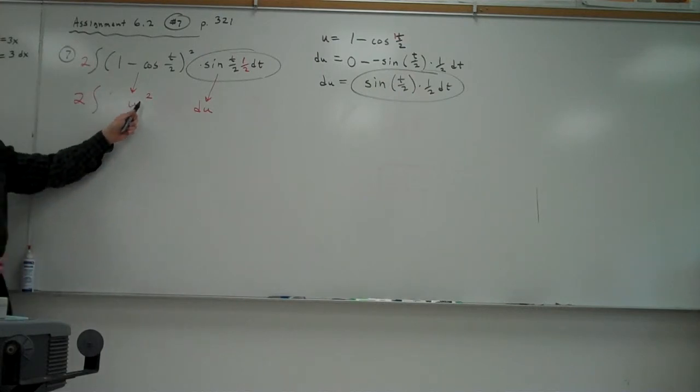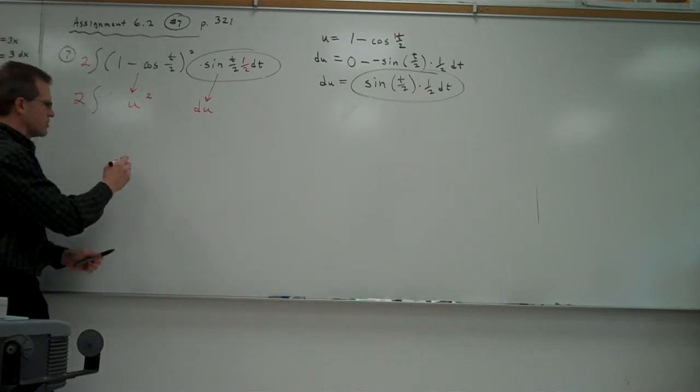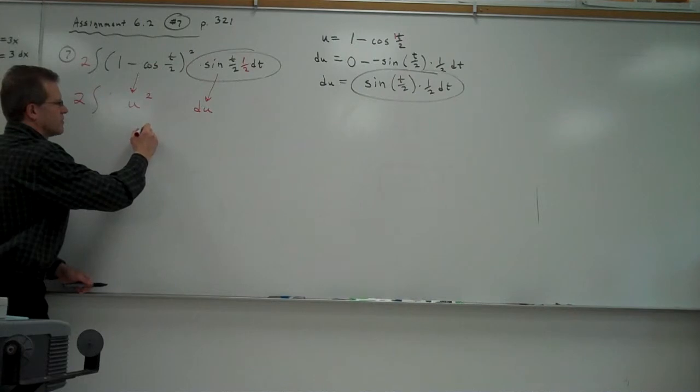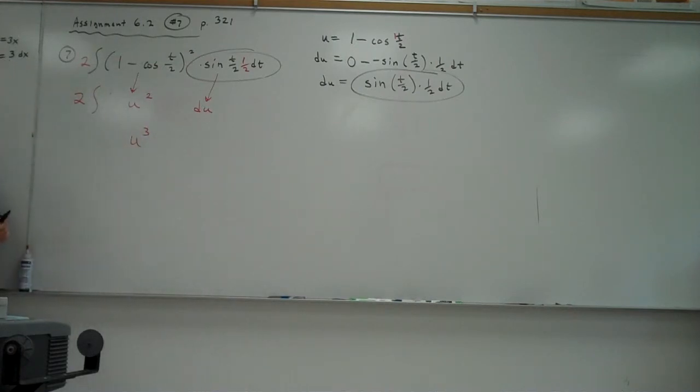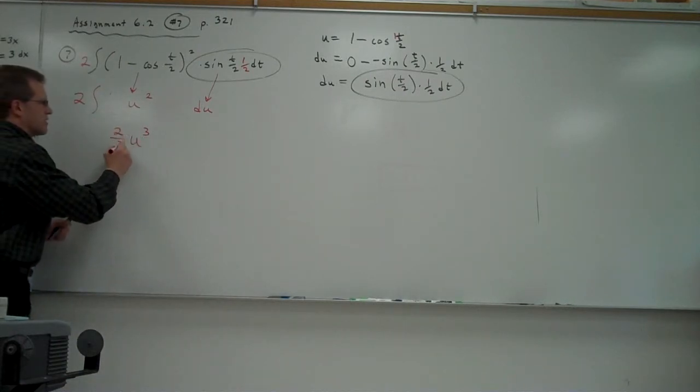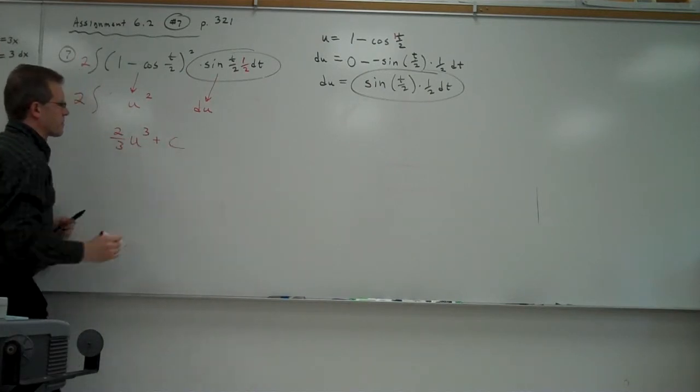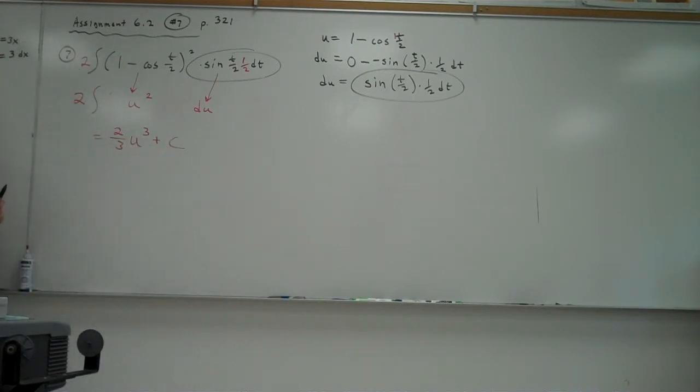So now this isn't hard, because I'm going to make this exponent 1 bigger, so it's going to be u to the 3 halves, or excuse me, u to the cube. And what number is going to go up front? 2 divided by 3, so 2 thirds plus c. So there's my integral calculated, or my answer to my integral.